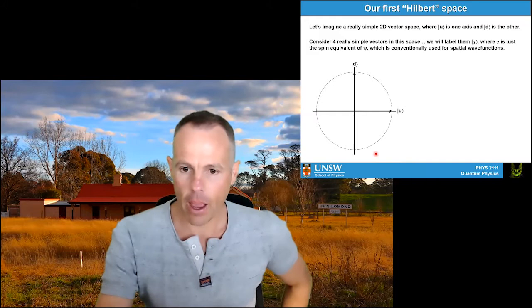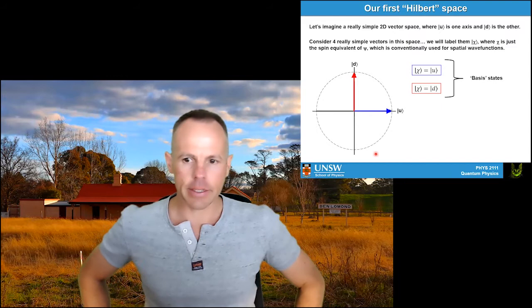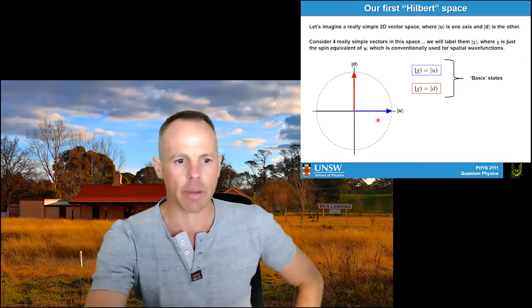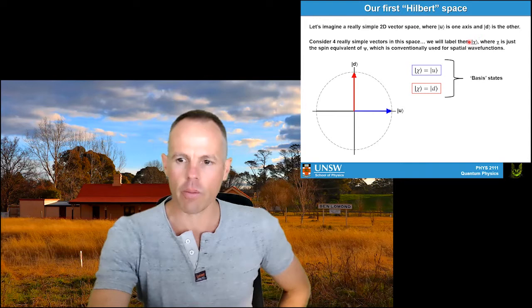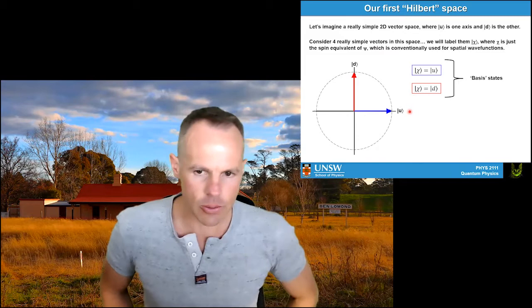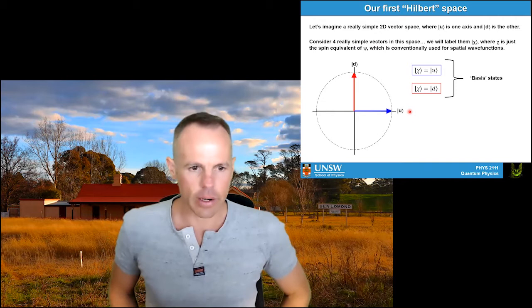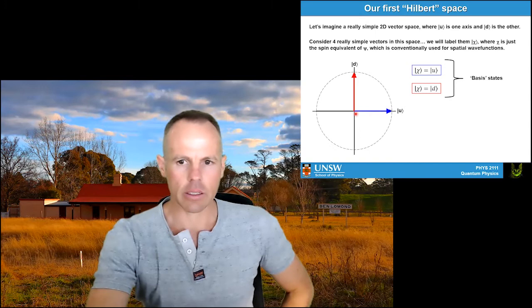I'm going to start with four really simple vectors in this space. We commonly use the Greek letter chi rather than psi for spin — usually chi for spin and psi for spatial wave functions. We have two really obvious vectors in this 2D complex vector space: up and down. I've set them as the orthogonal coordinates for that vector space — these are what we'll call basis states. I'll formally define basis states properly in the second half of this lecture. For now I'm just trying to give you a picture of what this is going to look like.